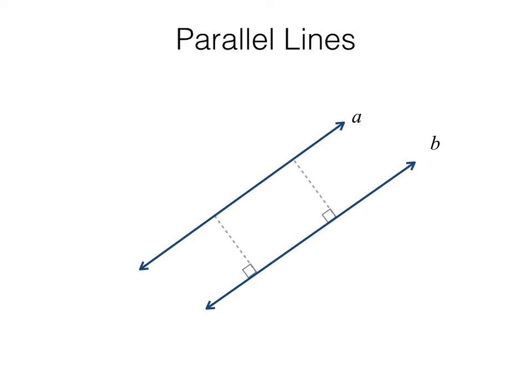In this diagram, lines A and B are parallel. We show this with these markings and also by using this notation: line A is parallel to line B.